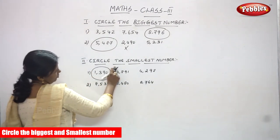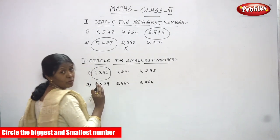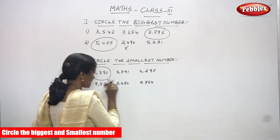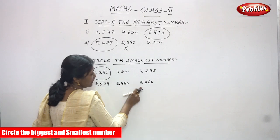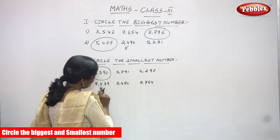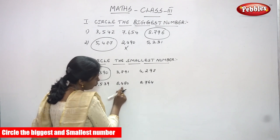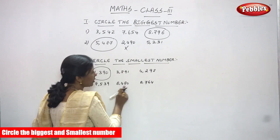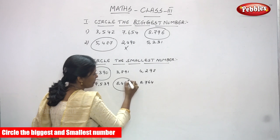We need to circle the smallest number. The hundreds place values are 500, 400, and 700. As I explained, if all numbers are the same in the thousands place, you move to the hundreds place. Here 500, 400, 700 — comparing these, 400 is the least. So 8480 is the smallest number.